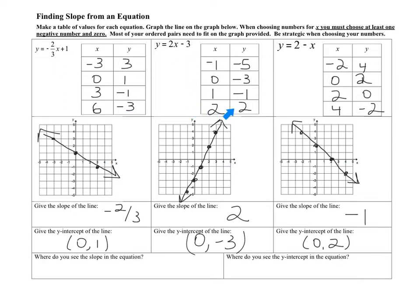You could have other ordered pairs in here. I graphed more ordered pairs than I actually have in my table. Here I chose negative 2, 0, 2, and 4, but you don't have to. Your line really should be going here — because my slope is negative 1, my line should be hitting the corners — but I just want every other 2. As long as your line looks like this, you did well.